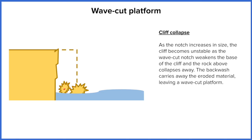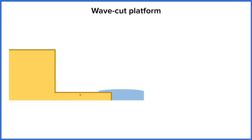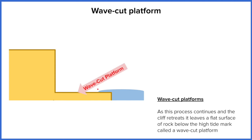This material gets taken back out to sea in the backwash, and during low tide a level platform starts to appear. As the wavecut notch undercuts the rock and the rest collapses, the cliff retreats — but the erosion only occurs at the high tide level and above. Everything at the lower tide level remains in place, creating a flat surface called a wavecut platform.